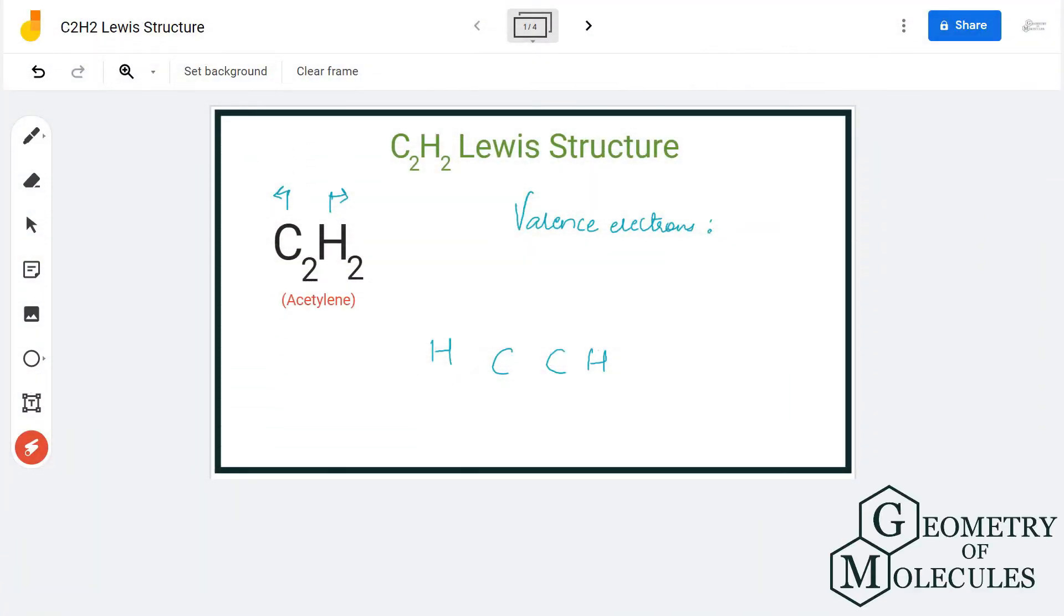Hi guys, today in this video we are going to look at the Lewis structure of C2H2 molecule. It's a chemical formula for ethane and it is made up of two atoms of carbon and two hydrogen atoms.